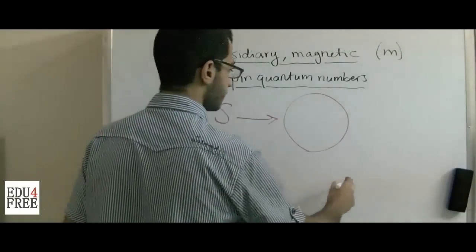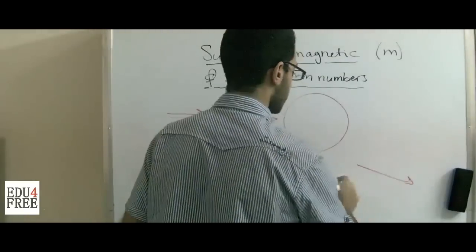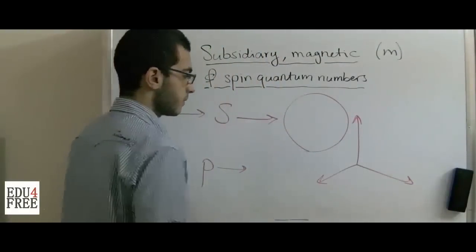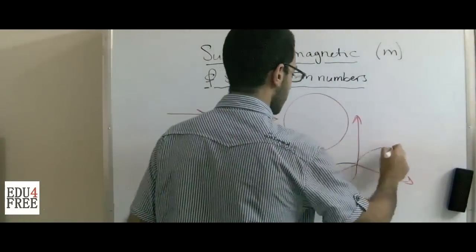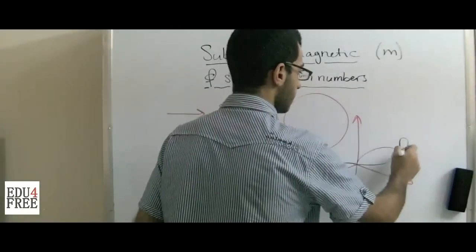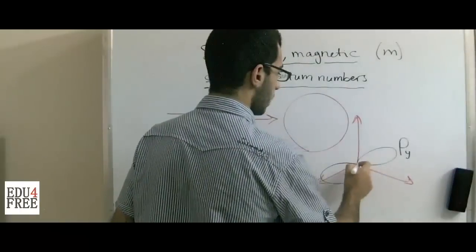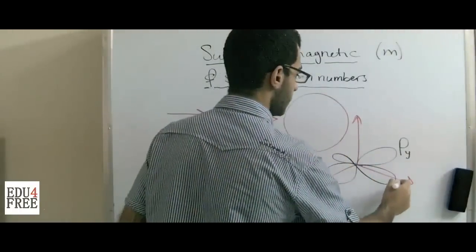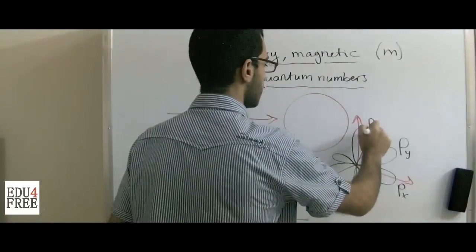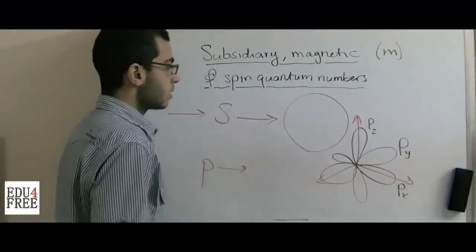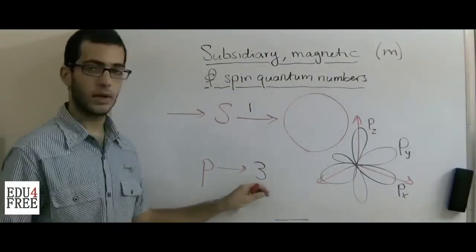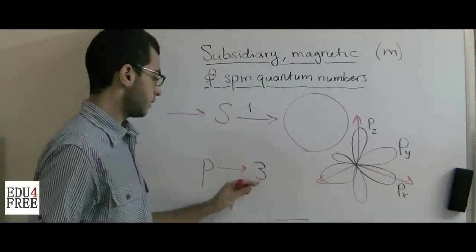The P sub-level contains three orbitals in 3D space — along the x-axis, y-axis, and z-axis. Each orbital has a dumbbell shape, like an infinity symbol. These are referred to as Px, Py, and Pz. So S contains 1 orbital, P contains 3 — following a pattern of odd numbers.